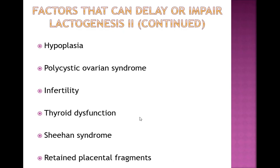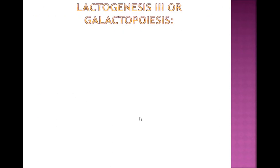The next phase is lactogenesis 3, or galactopoiesis — the most important phase for understanding how to build a good milk supply and get breastfeeding off to a good start. Unlike lactogenesis 1 and 2, which are hormonally driven and happen automatically if the mom is pregnant, getting to galactopoiesis requires active involvement of both mom and baby.